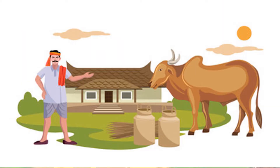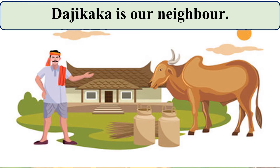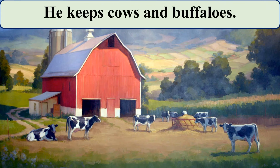Next picture — what does Priya tell us? Daji Kaka is our neighbor. In the picture you can see one man — his name is Daji Kaka. Neighbor means someone who stays next door. He keeps cows and buffaloes — you can see them in the picture. He keeps cows and buffaloes, meaning he has cows and buffaloes.